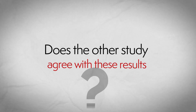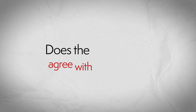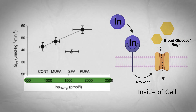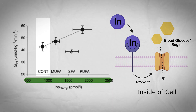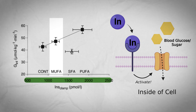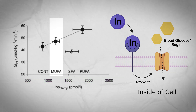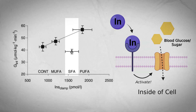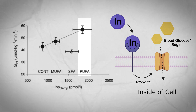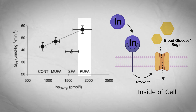Does the other study agree with these results? Keep in mind that for this study, people were exposed to each fat condition far longer than the first study, and they also added a condition looking at polyunsaturated fats. On the horizontal axis we have increasing insulin concentrations as well as each condition: control (no fats consumed), MUFA (continuous monounsaturated fat drink), SFA (continuous saturated fat drink), and PUFA — a polyunsaturated fat drink.